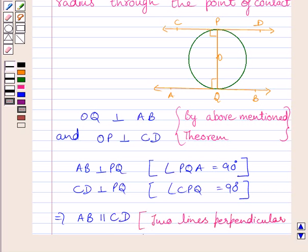Now from this discussion, we get a circle can have two parallel tangents at the most.